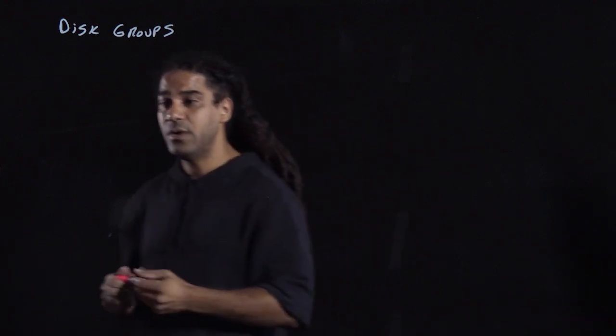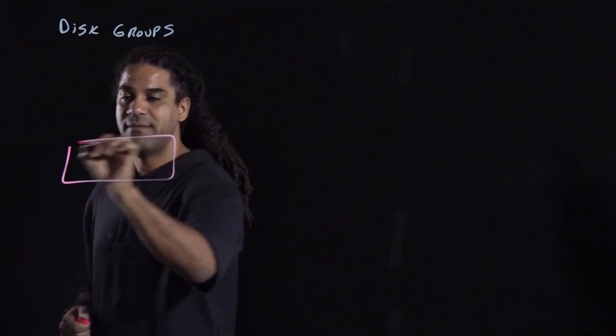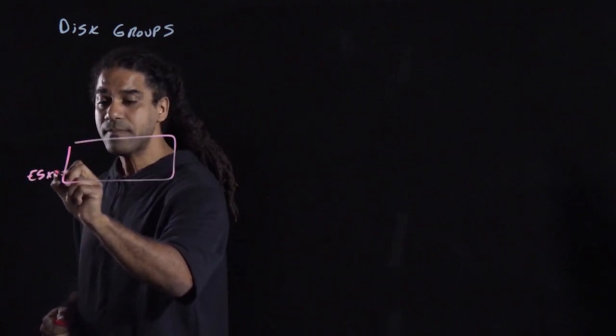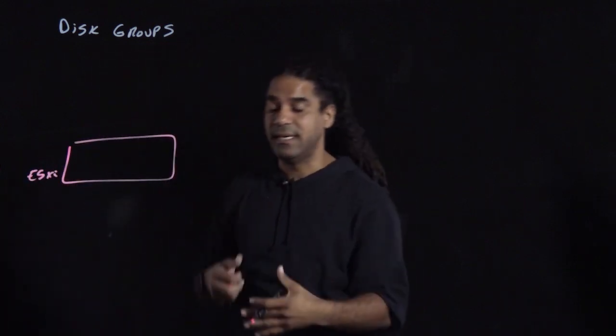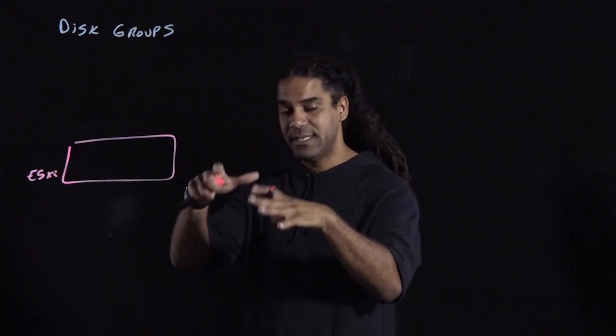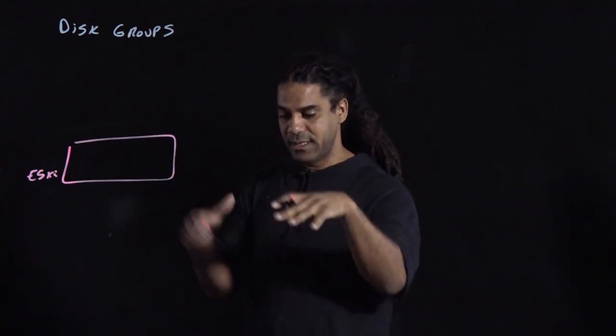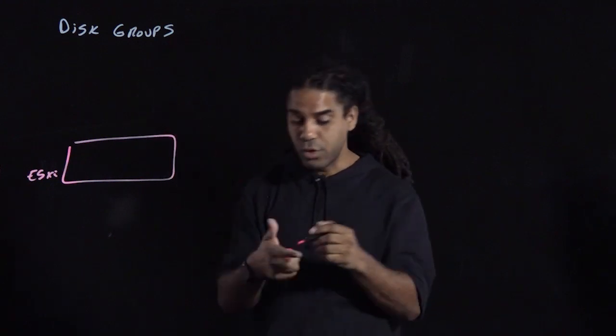Disk groups are actually a collection of disks that exist in the host in that cluster. So if you have an ESXi host, you will put a bunch of disks inside the host. But the disks themselves are put in this collection, this logical unit of disk groups.